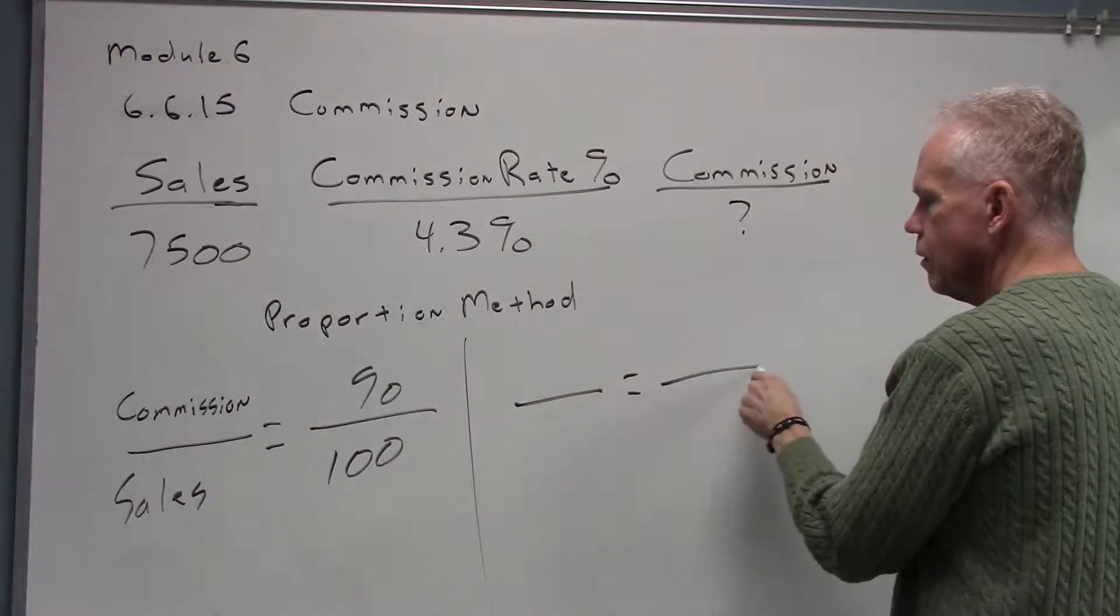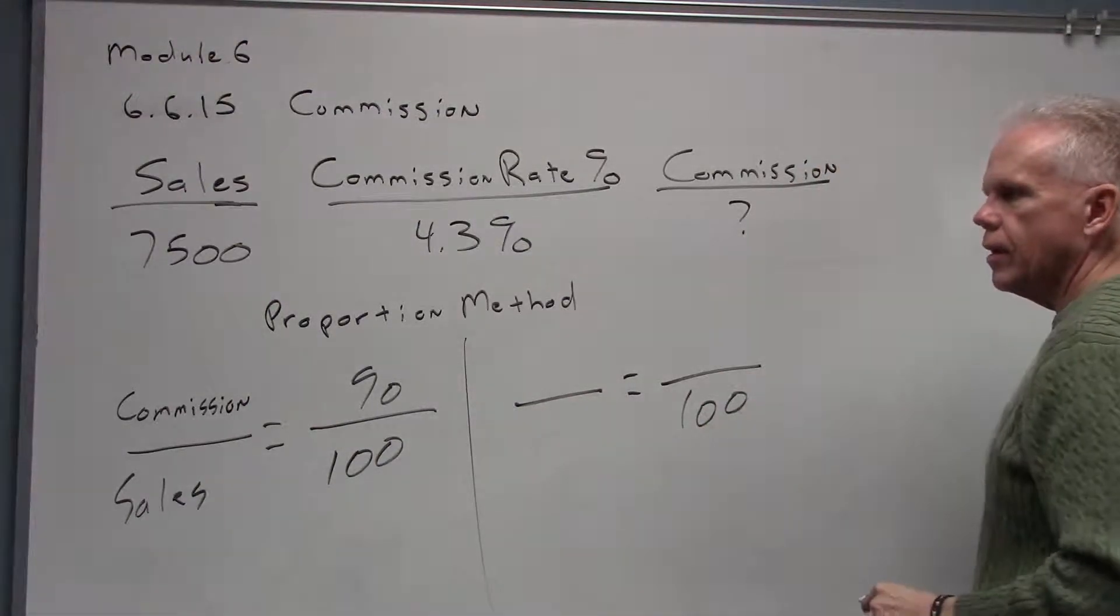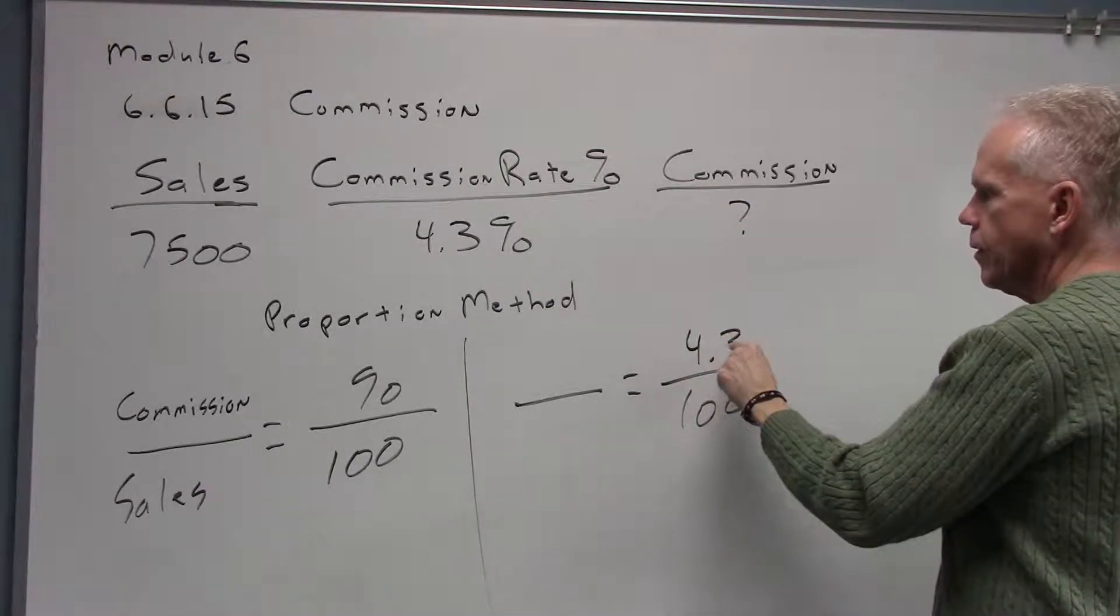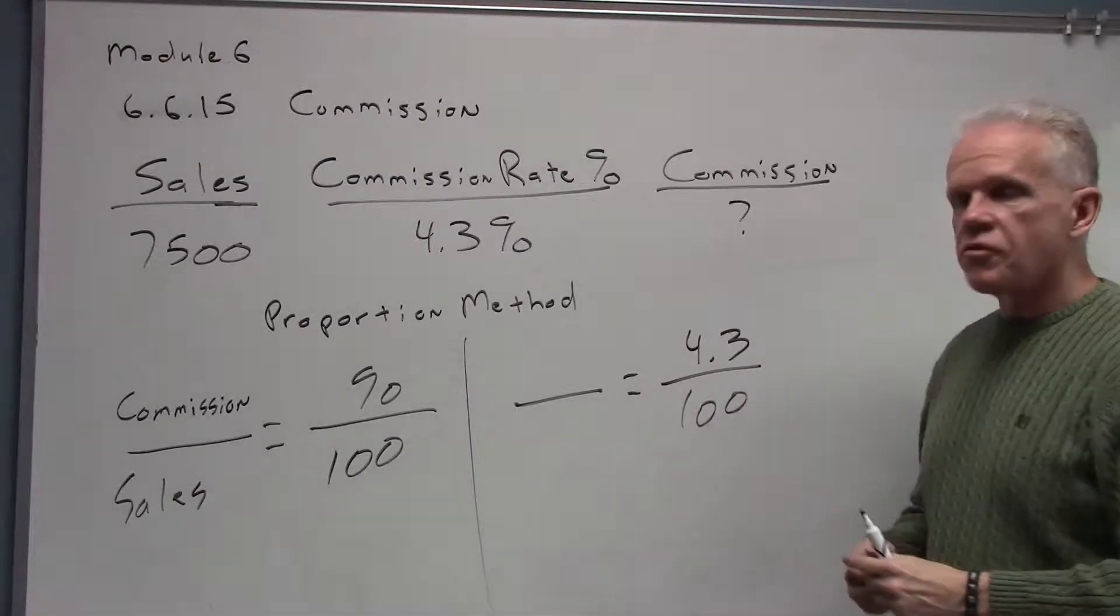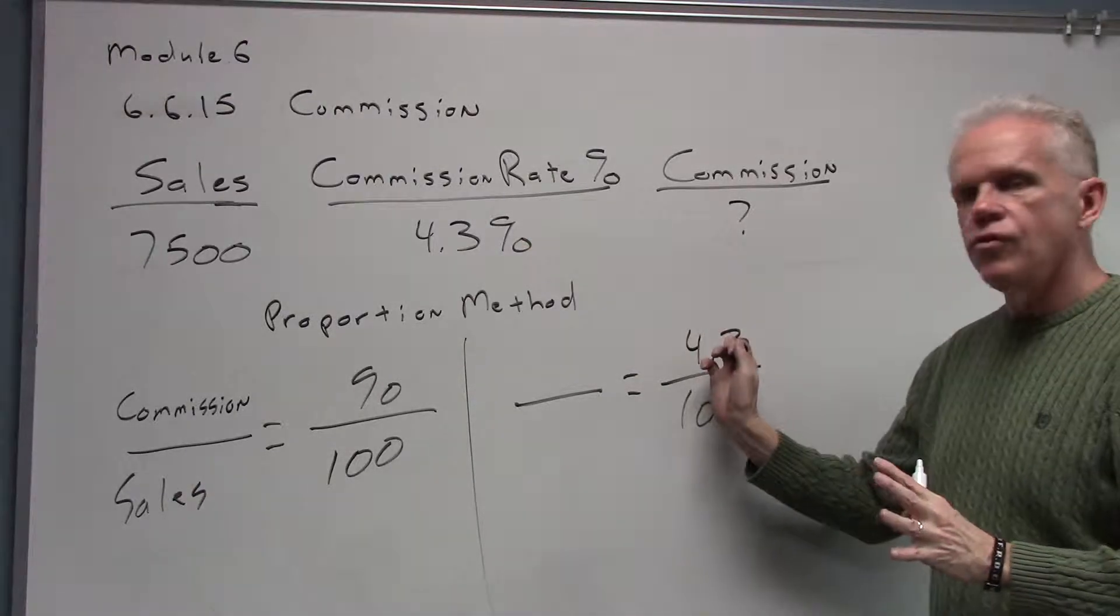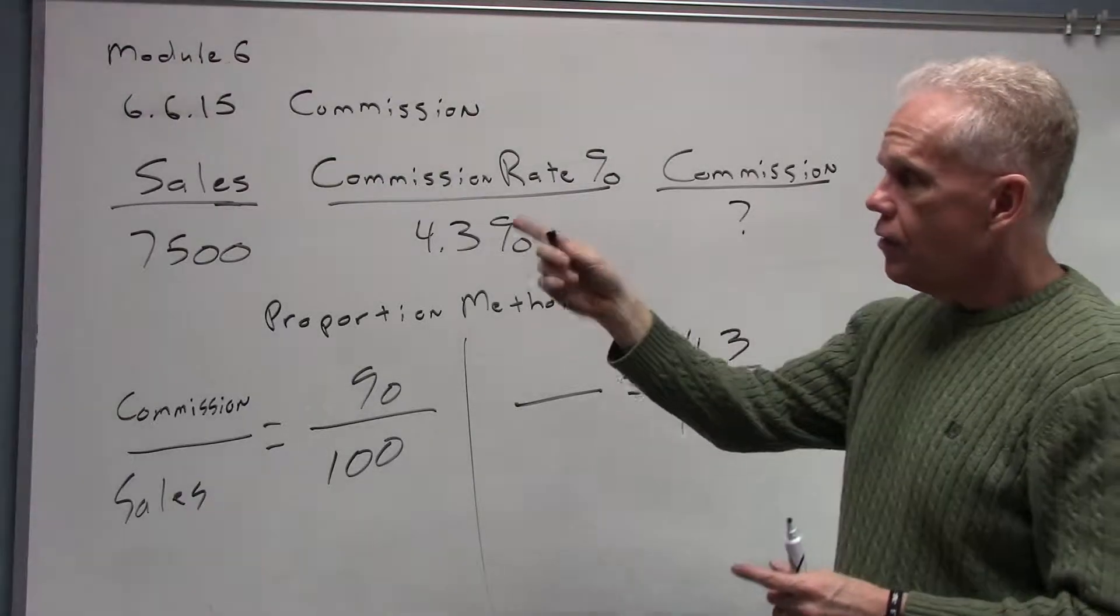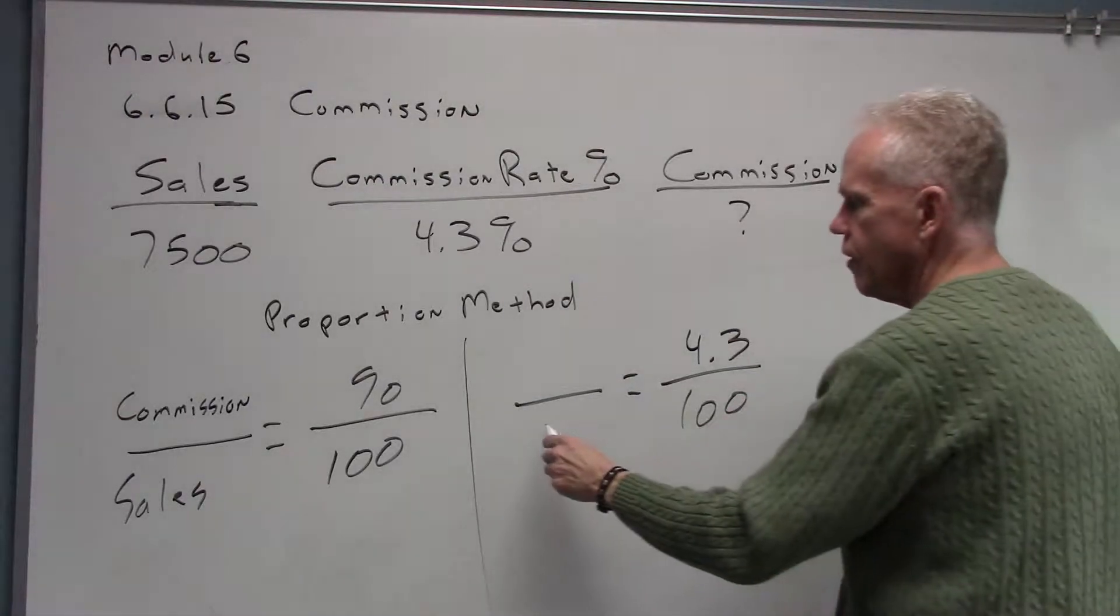Here we go. Here's 100 right here, automatic. My commission rate or my percent is 4.3. Notice we don't have to move the decimal here. We can just put the 4.3 straight in exactly the way it is. Then our sales in this case, the person sold $7,500.